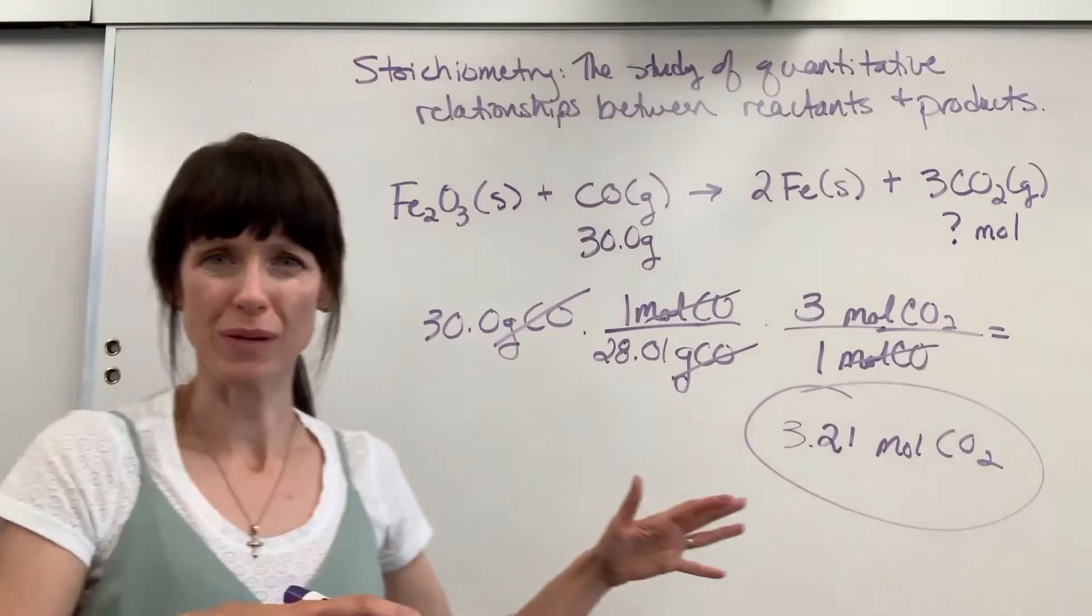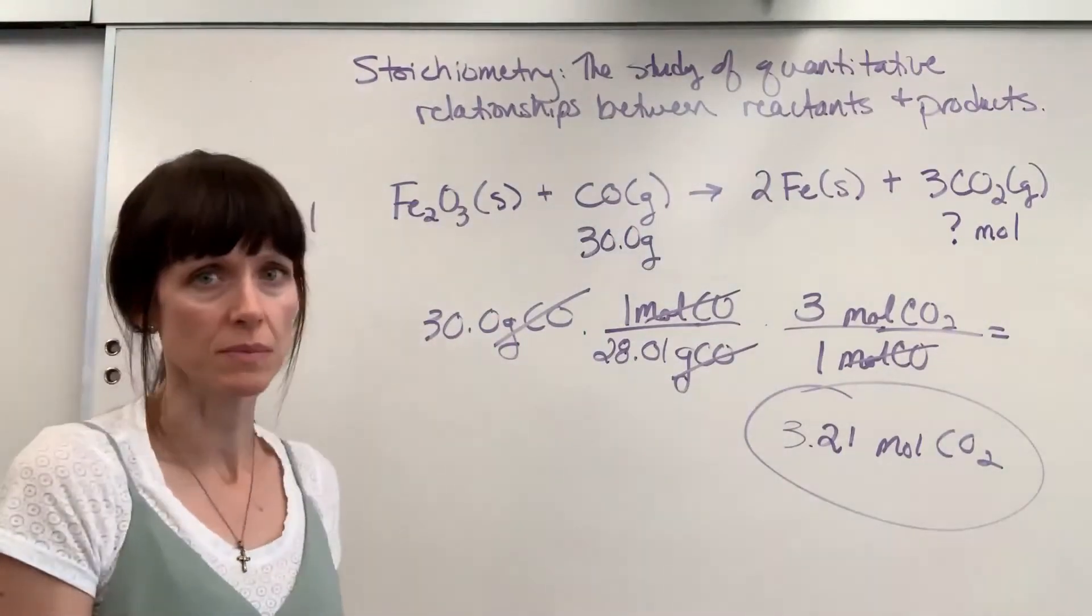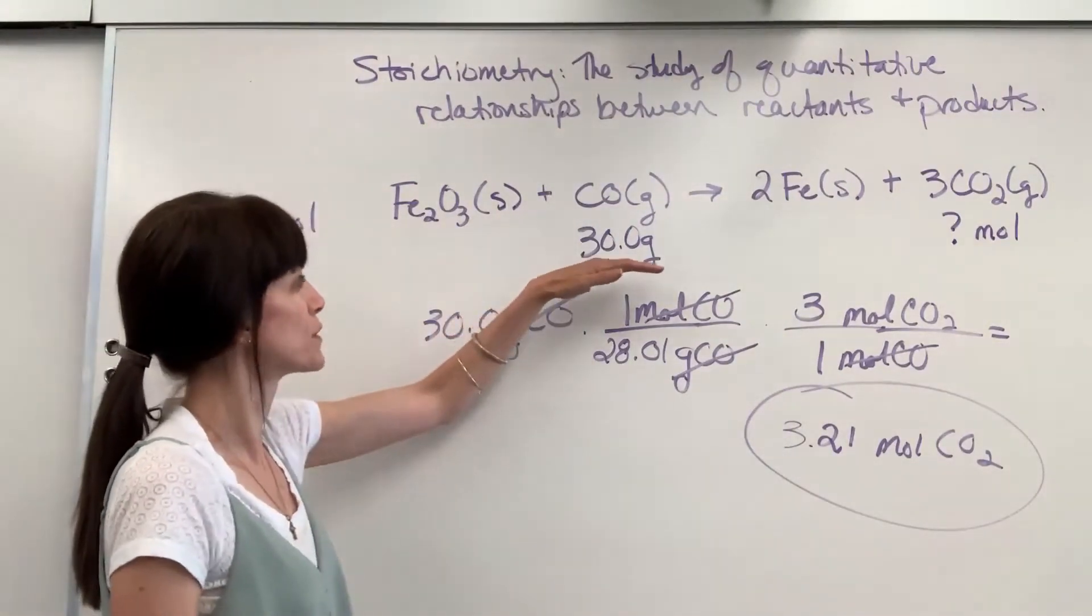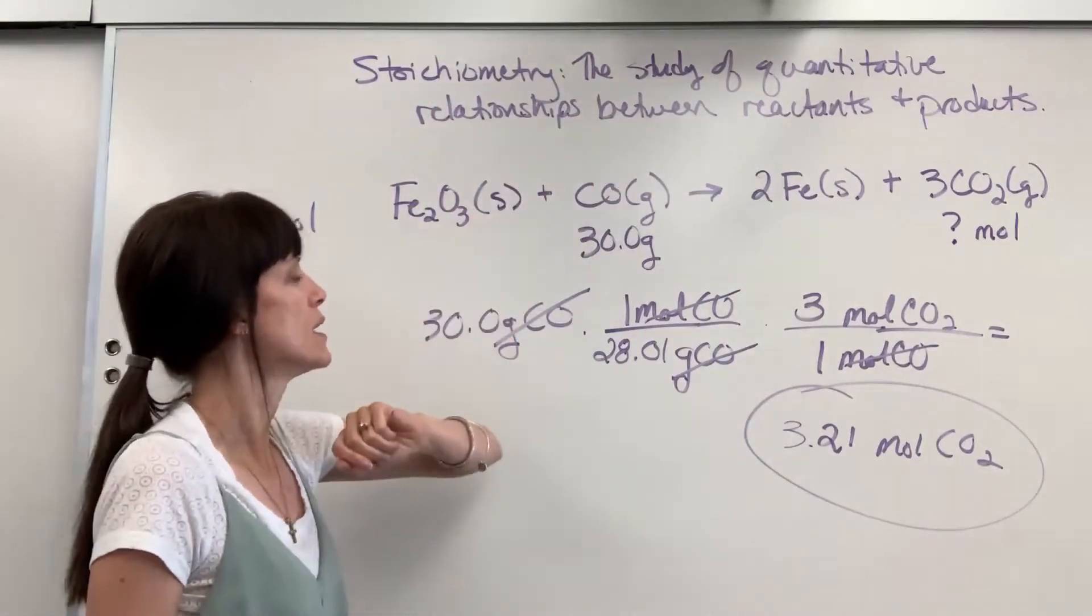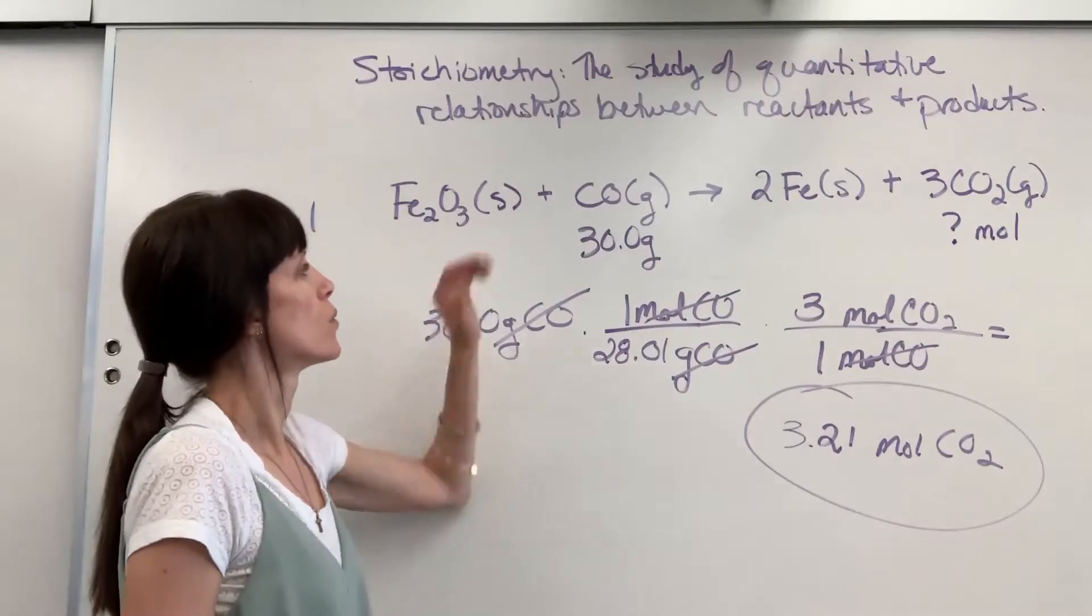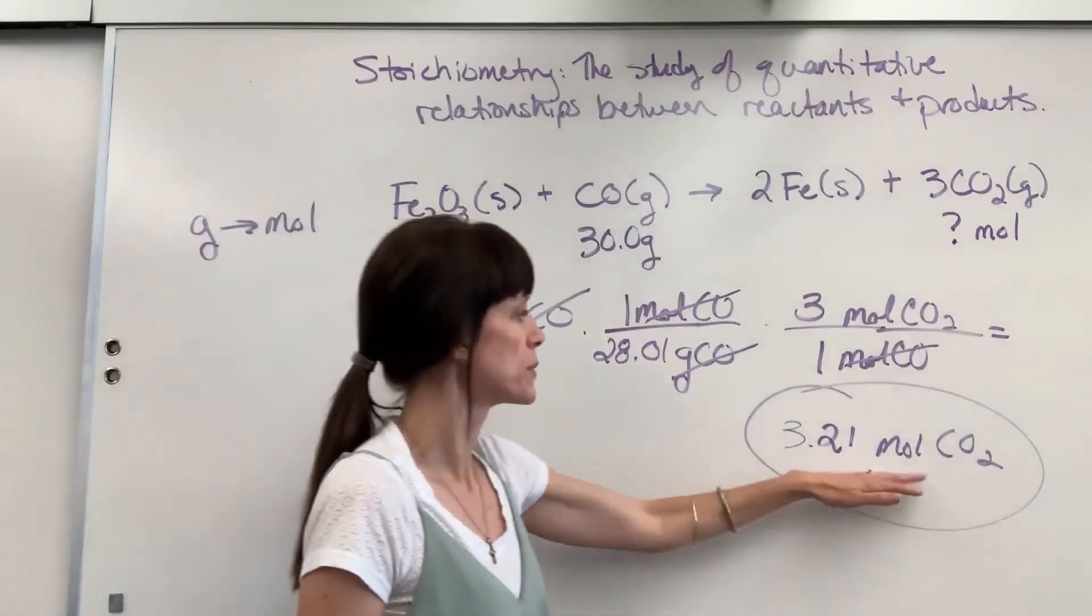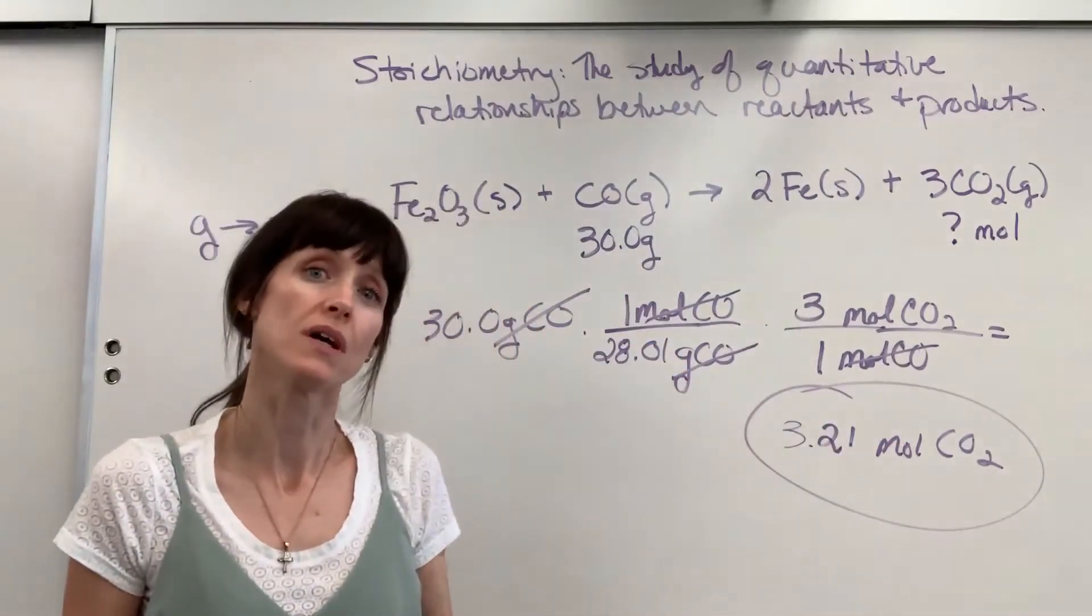So let's go back. We have quite a few numbers on here. Here's what this means. If you have 30 grams of CO, and we assume plenty of the iron 3 oxide, you have 30 grams of CO, when this reacts it's going to produce 3.21 moles of CO2.